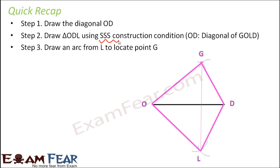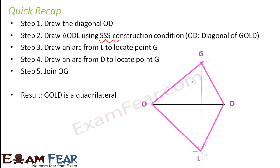Draw an arc from point L to locate the point G because now we know the measurement of this diagonal. Draw another arc from point D to locate the point G. So this is how we will locate point G and finally we joined OG which was the fourth side of the quadrilateral. So the result was that we obtained GOLD quadrilateral.